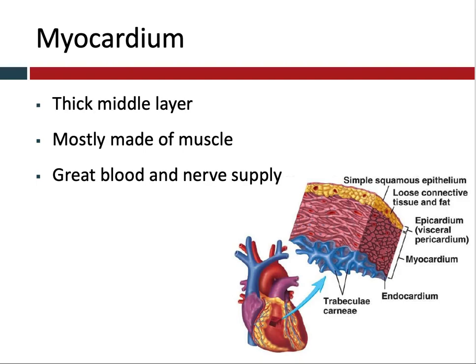Then we have the myocardium. It's the really thick middle layer of the wall of the heart. It's made up mostly of muscle. And because this muscle contraction is so essential to our survival, it has really good blood and nerve supply, which we'll talk about in other screencasts.